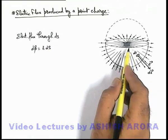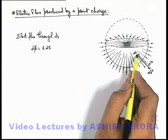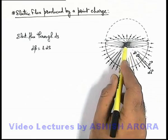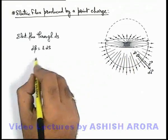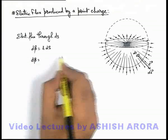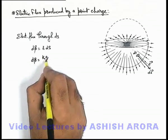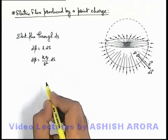We know that at a distance r from the center of the sphere where a charge is placed, electric field can be given as simply kq/r² due to a point charge, multiplied by dS.